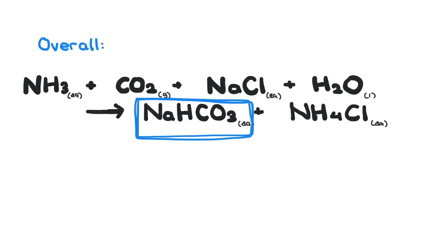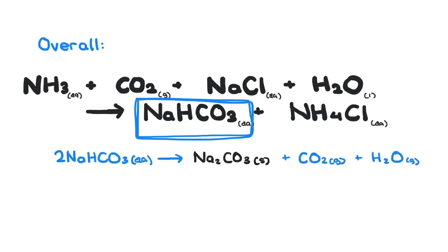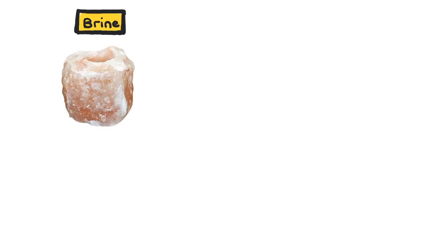First, we get the brine — that's a super-saturated sodium chloride solution. One way is to just dissolve the salt in water, or if you can get it naturally, locate some rock salt and blast pressurized hot water into boreholes, which dissolves the salt and brings it to the surface.